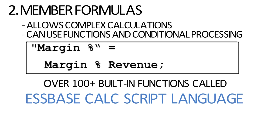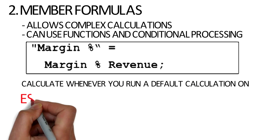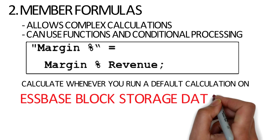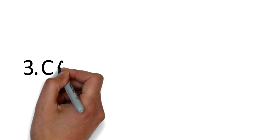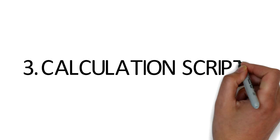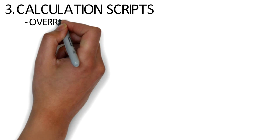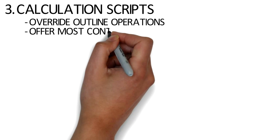Please don't confuse the CalcScript language from actually writing a CalcScript. Something that's in the outline or something using a member formula is going to aggregate and calculate whenever you run a default calculation on an S-Base block storage database. If, however, you want to overwrite that — meaning you want to do something that's not in the outline, or what you see in the outline is not what you want to do every single time — you can put that in what's called an S-Base CalcScript.